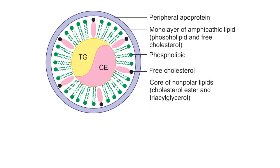Now we will see the structure of lipoproteins. Lipids are water-insoluble compounds and they are not transported as such in the plasma. So the alternative arrangement is made in the form of lipoproteins. Lipoproteins have a core of non-polar lipids which contains triacylglycerol and cholesterol ester. This core is surrounded by a monolayer of amphipathic lipids which contains phospholipid as well as free cholesterol. The outermost layer is of peripheral lipoprotein.